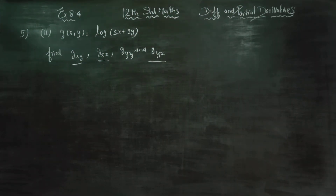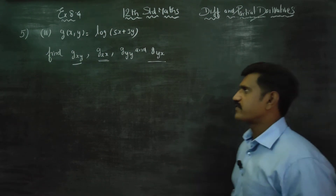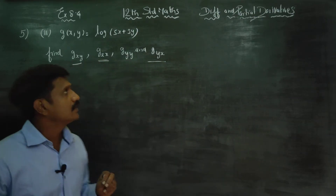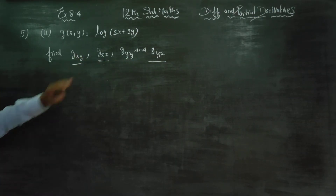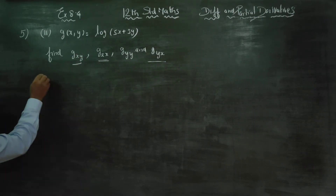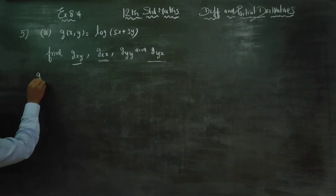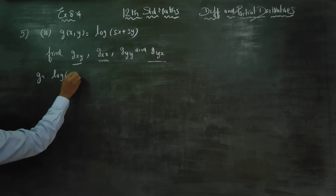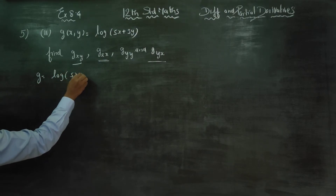Dear students, this is example number 8.4, sum number 5, second subdivision. g is equal to logarithm of 5x plus 3y.